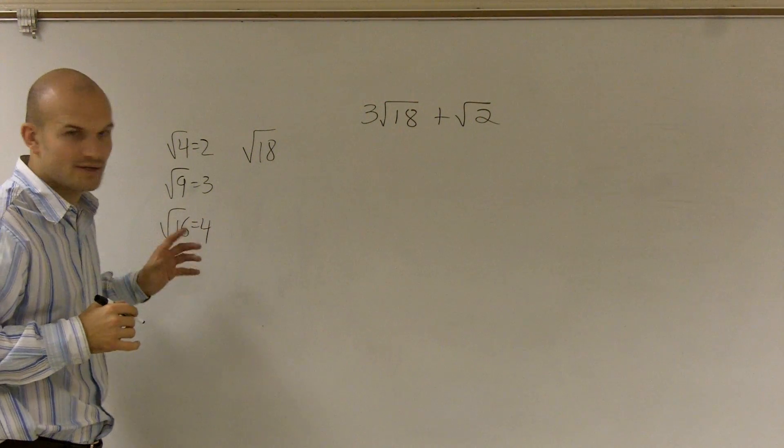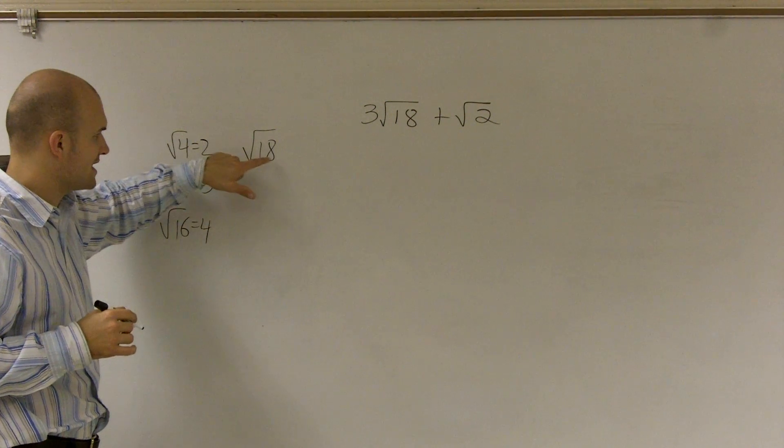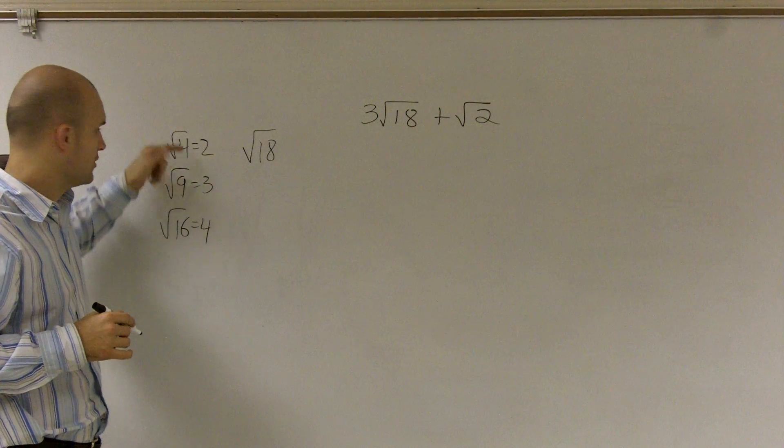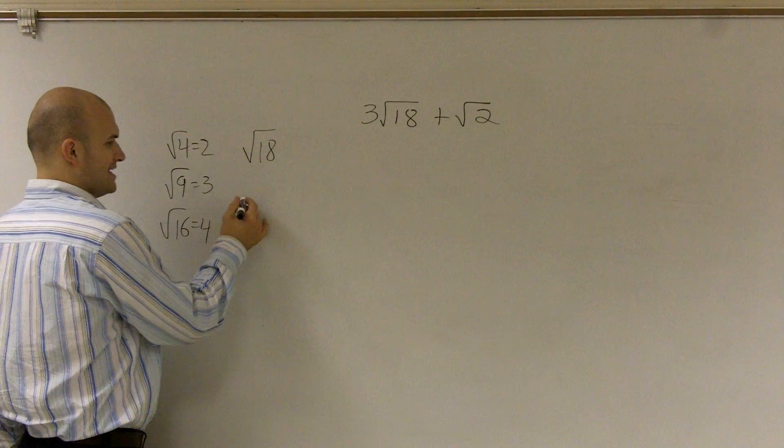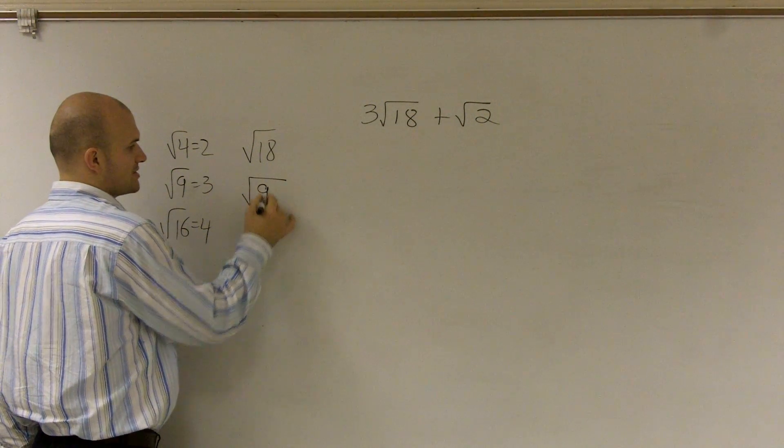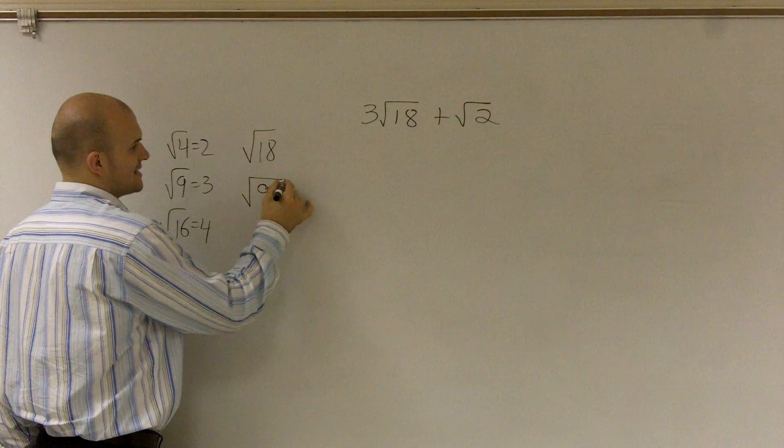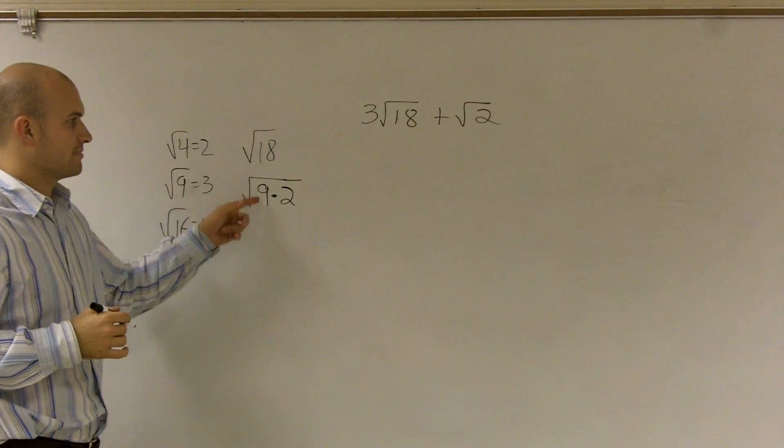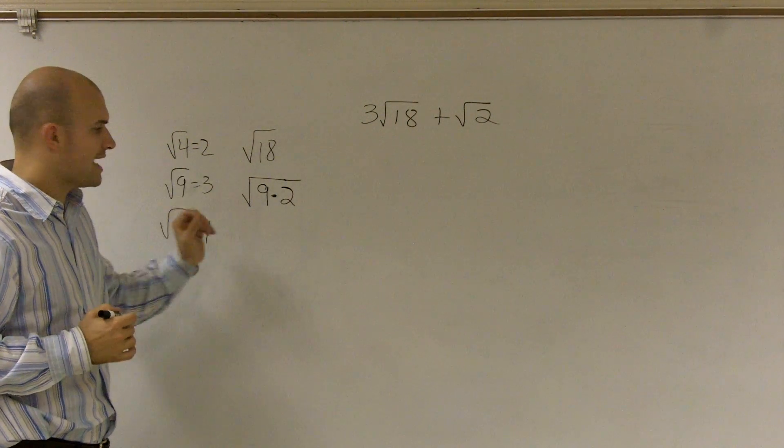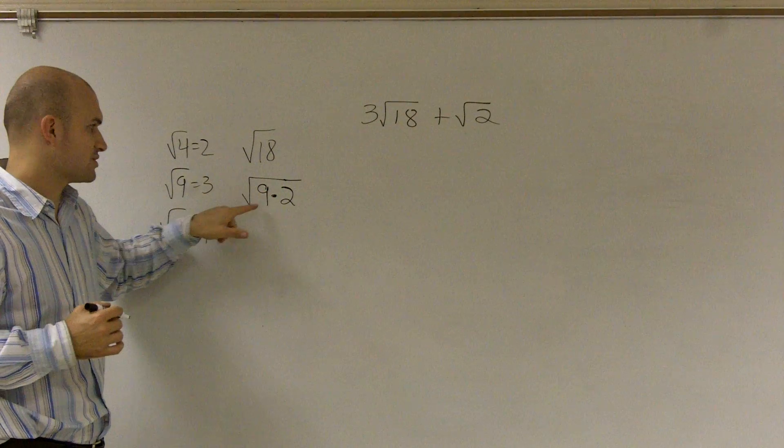And what I want to do is see if I can manipulate this 18 into representing it with one of these square numbers. So if I wrote 18 as 9 times 2, that's the same thing as 18, right? Well, now the helpful thing is I can now take the square root of 9.